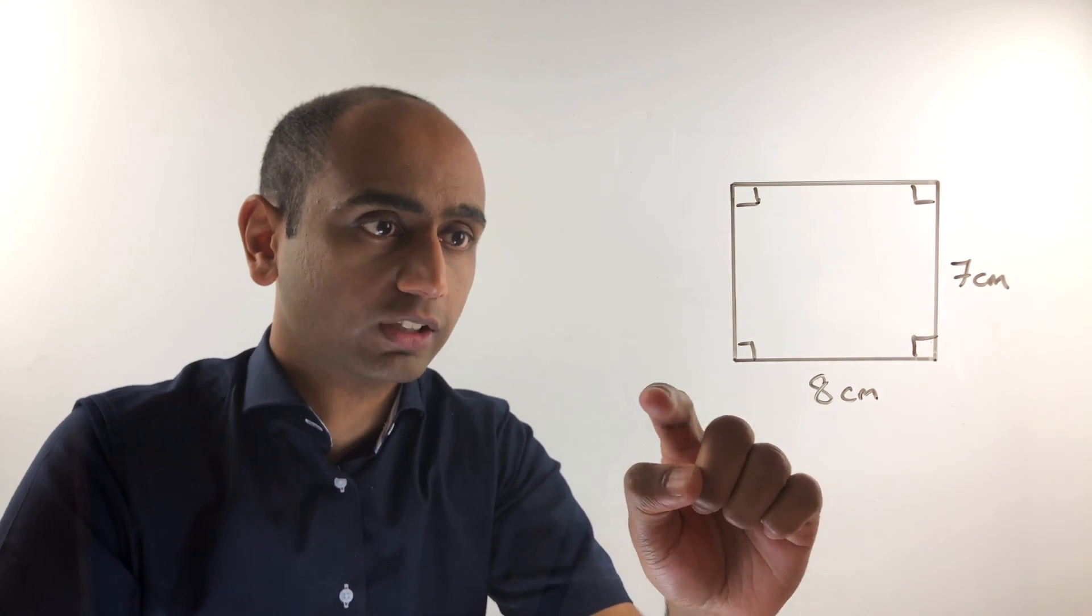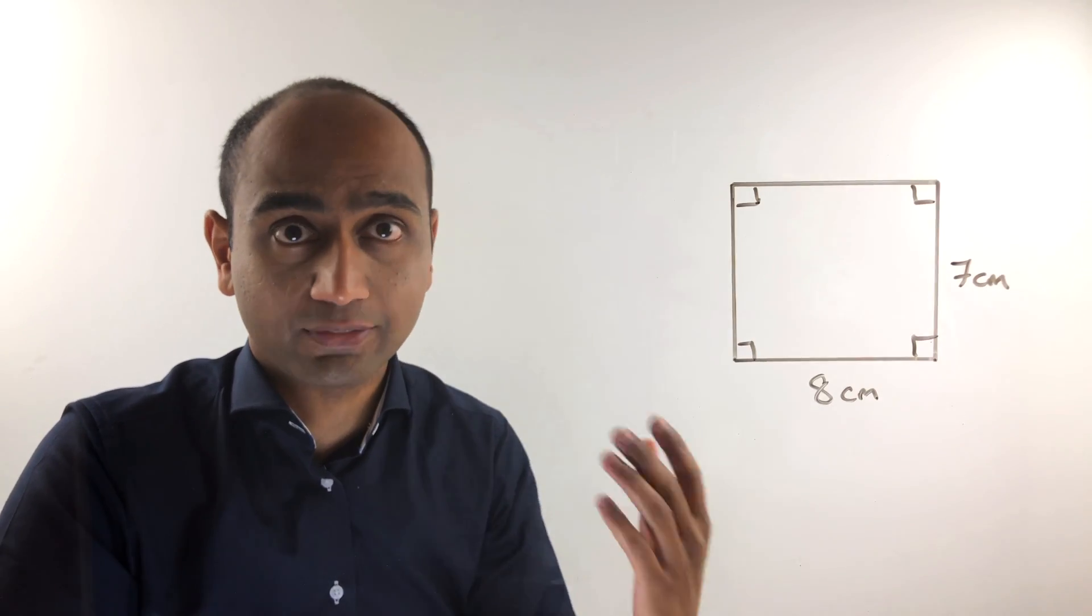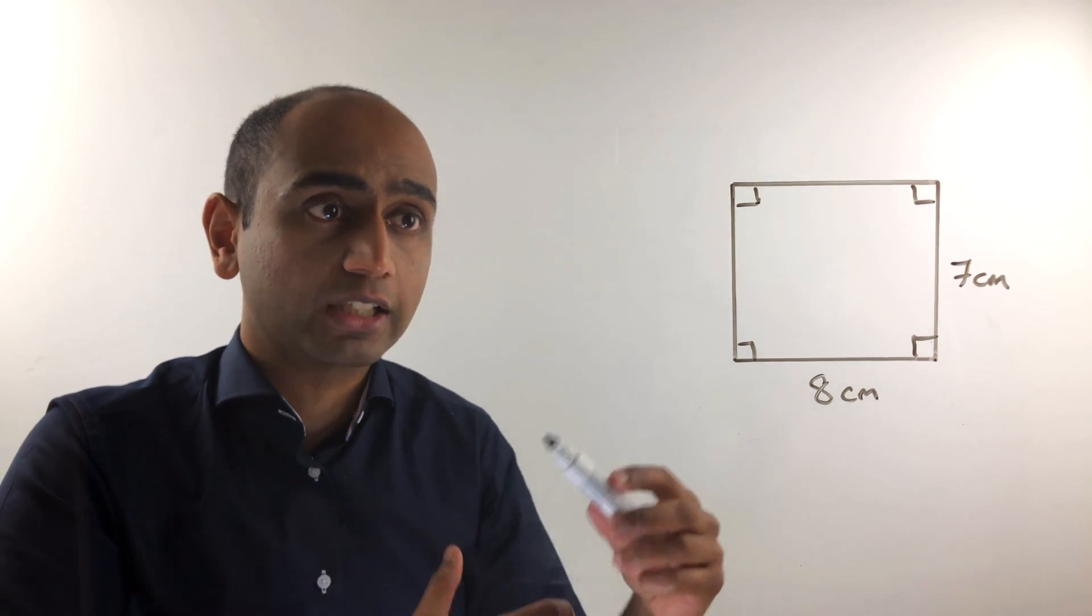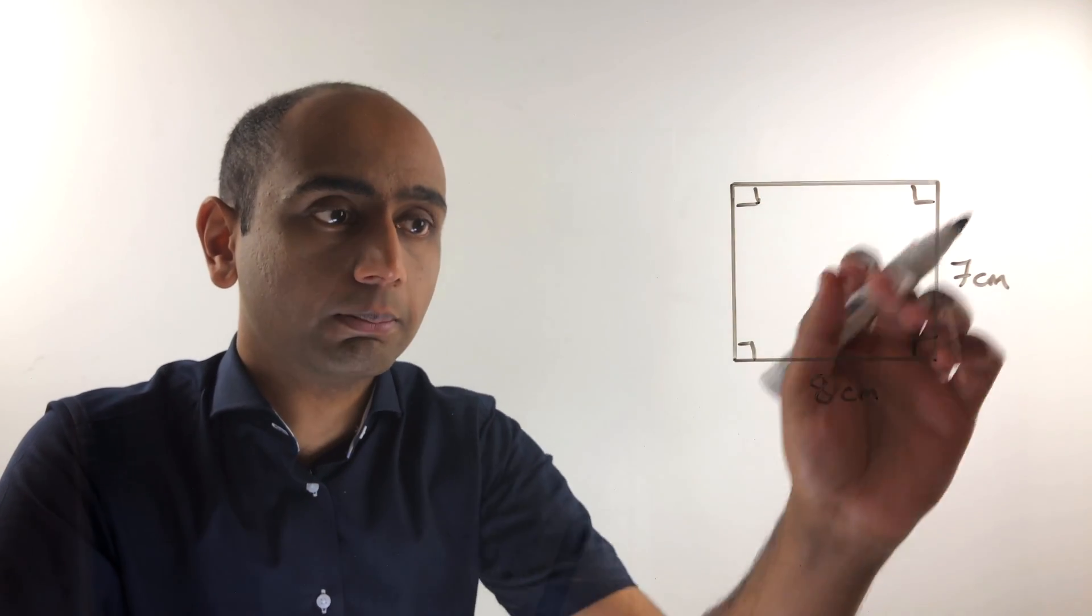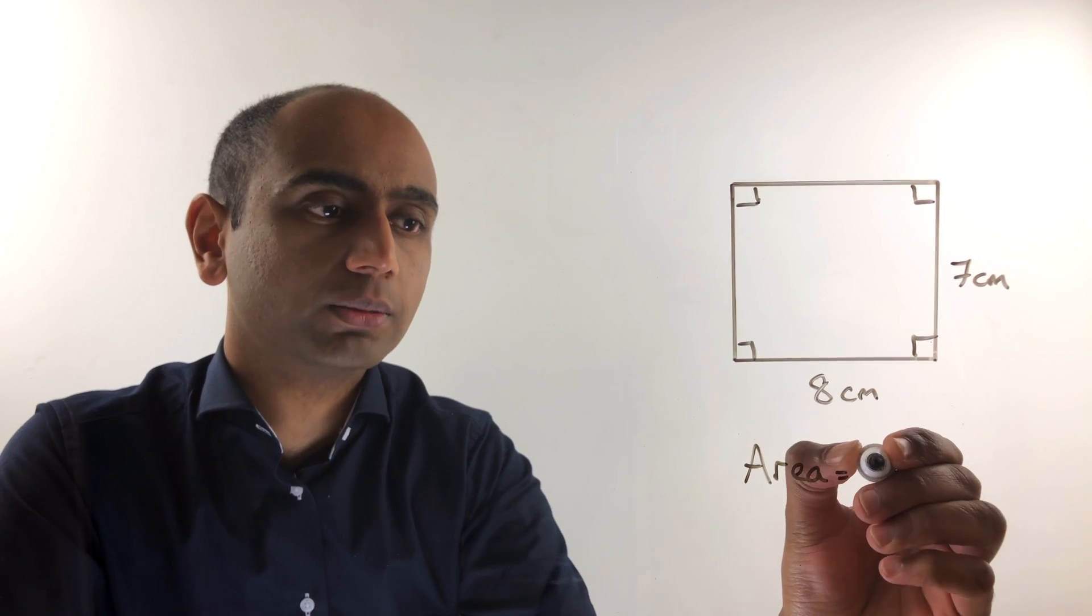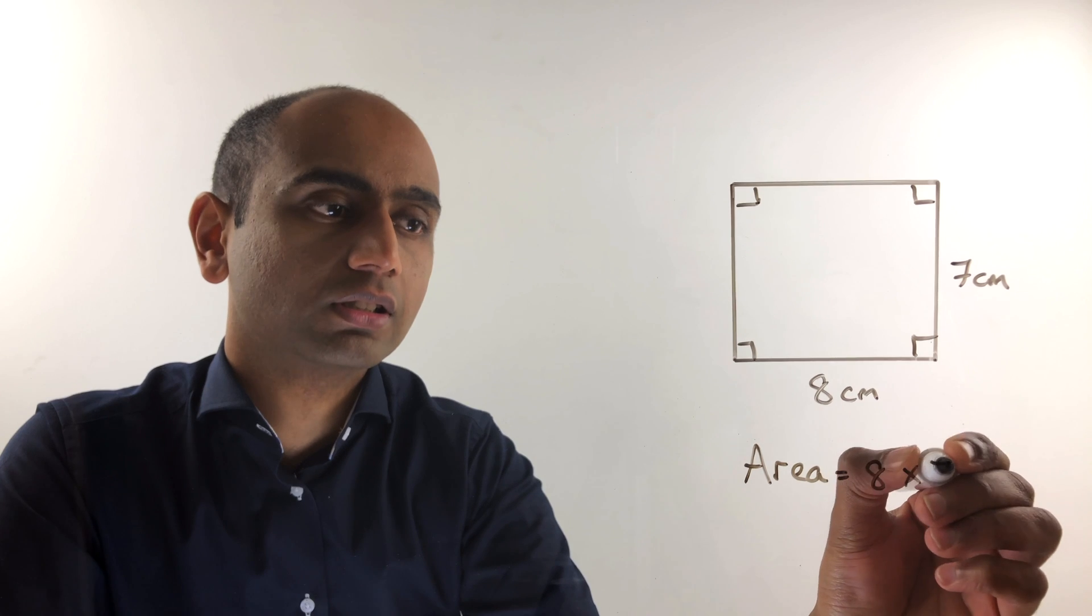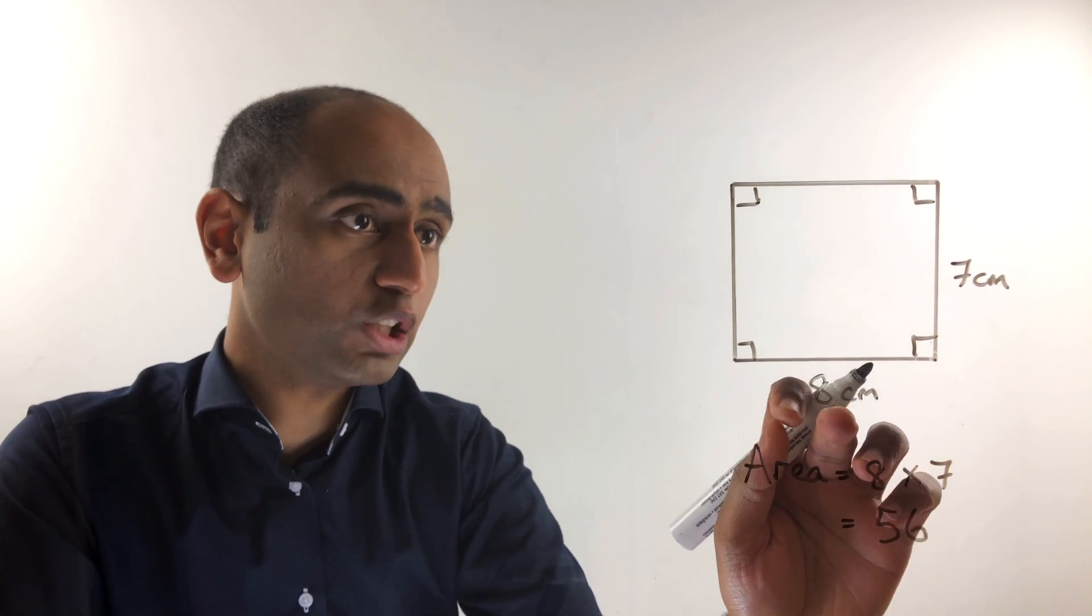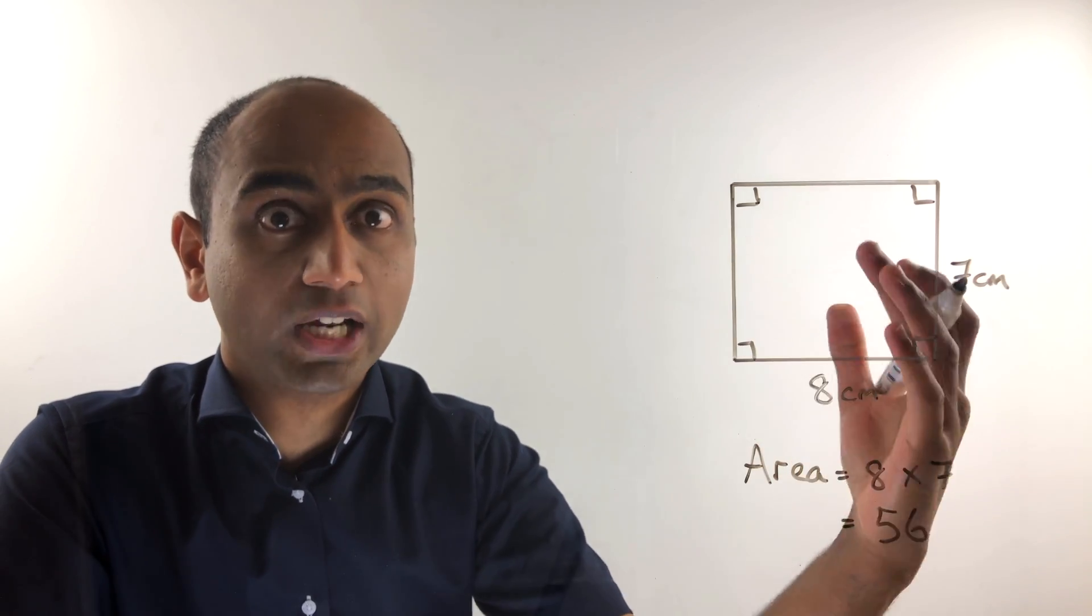Here's a rectangle with a length of 8 centimetres and a width of 7 centimetres. From lesson G16A you should know that you can find the area by multiplying those two together. So the area of this rectangle is simply 8 times 7, which gives us an answer of 56, and the units will be centimetres squared.